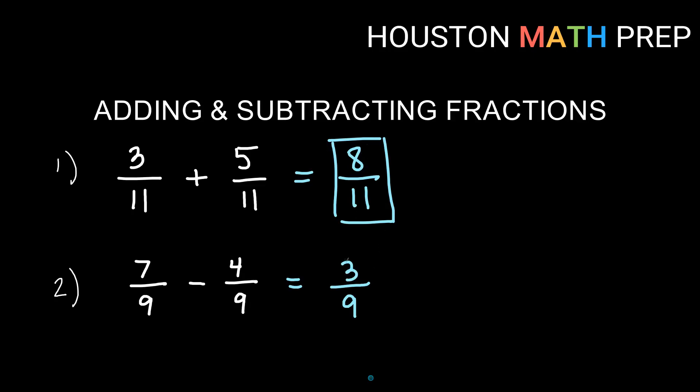Now you always want to check your answer and make sure that you're writing it in lowest terms or the simplest form. When we looked at 8 over 11 before, we didn't have anything that was in common. When I look at 3 over 9, both of these are divisible by 3. So I can go ahead and divide each of these by 3. This would become 1 over 3. We're just dividing the top and the bottom by 3 because they both have a common factor of 3. So the reduced version of 3 over 9 is going to be 1 third.